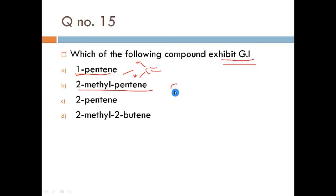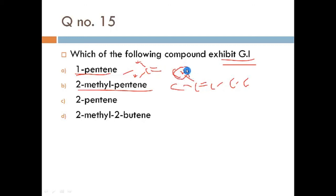Now looking at 2-methylpentene: the double bond is at position 2 and a methyl group is also attached at position 2. This means one double bonded carbon has two methyl groups attached — two same groups — so this also will NOT show geometrical isomerism.